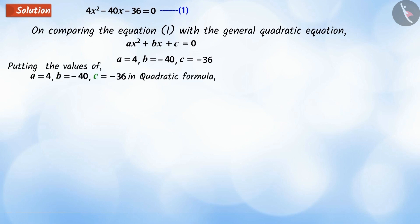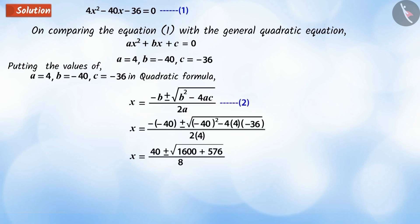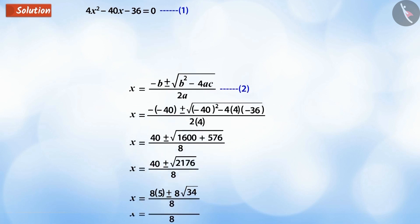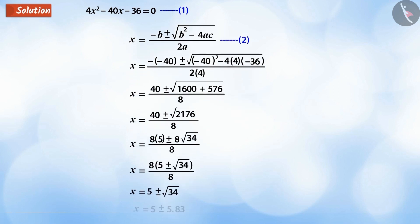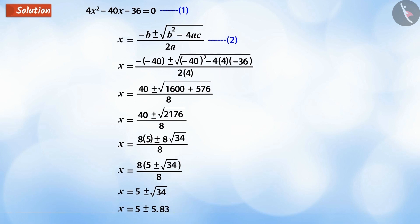Place the values of a, b and c in the quadratic formula that is in equation 2 and solve. On solving, we get x equals 5 plus and minus 5.83.